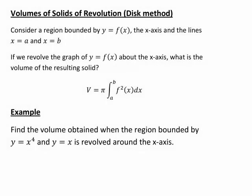This recording gives a second example of finding the volume of a solid of revolution using the disc method. We're considering a region bounded by y equals f, the x-axis, and lines x equals a and x equals b. In the general case, if we revolve the graph of y equals f about the x-axis, the volume of the resulting solid would be pi times the integral from a to b of f squared of x dx.